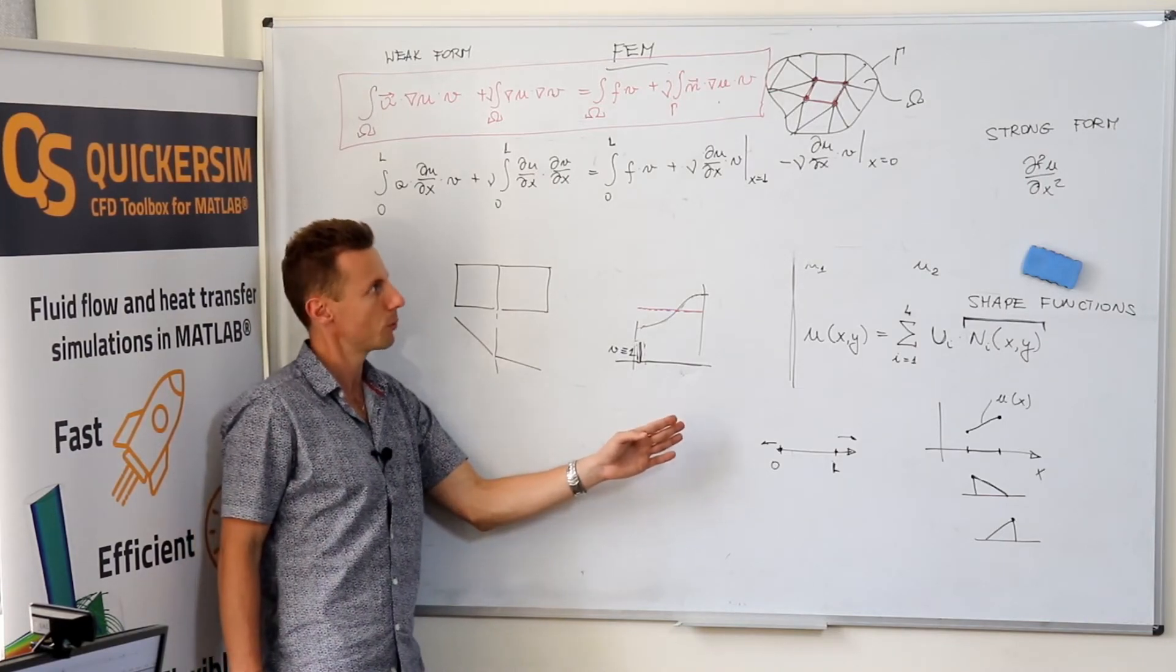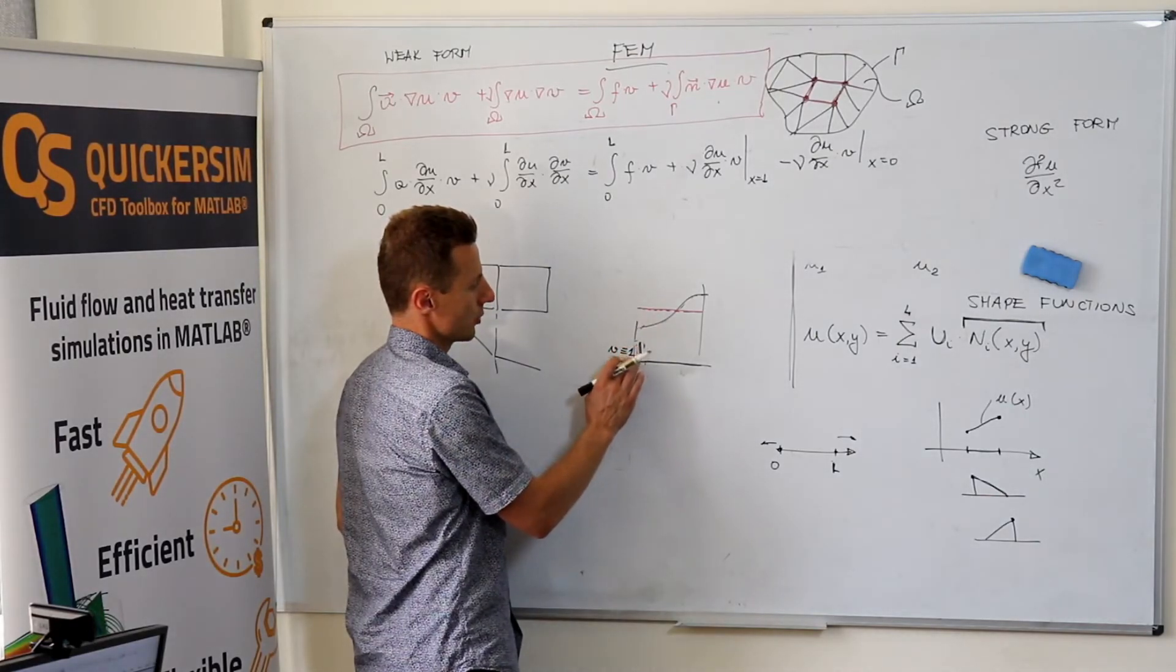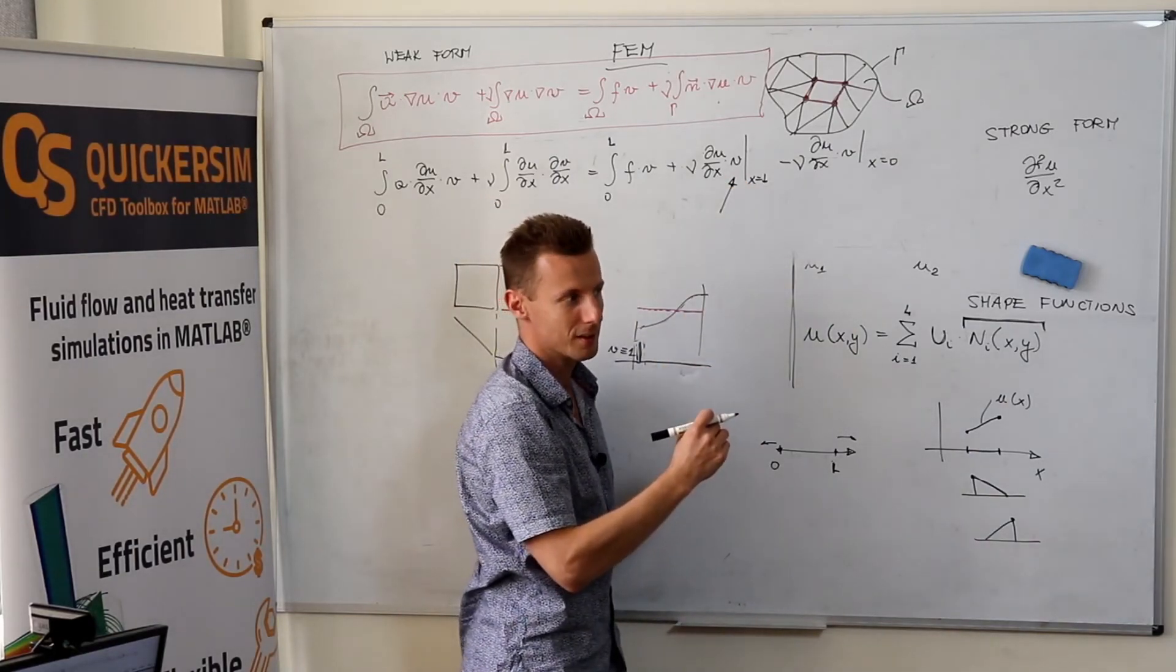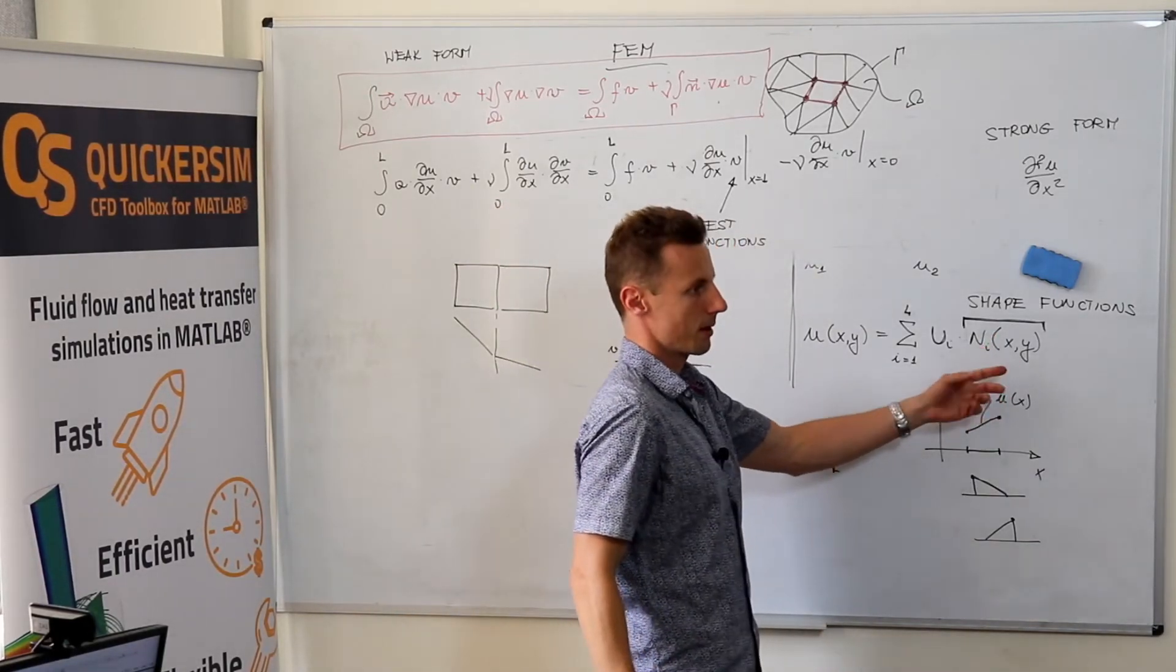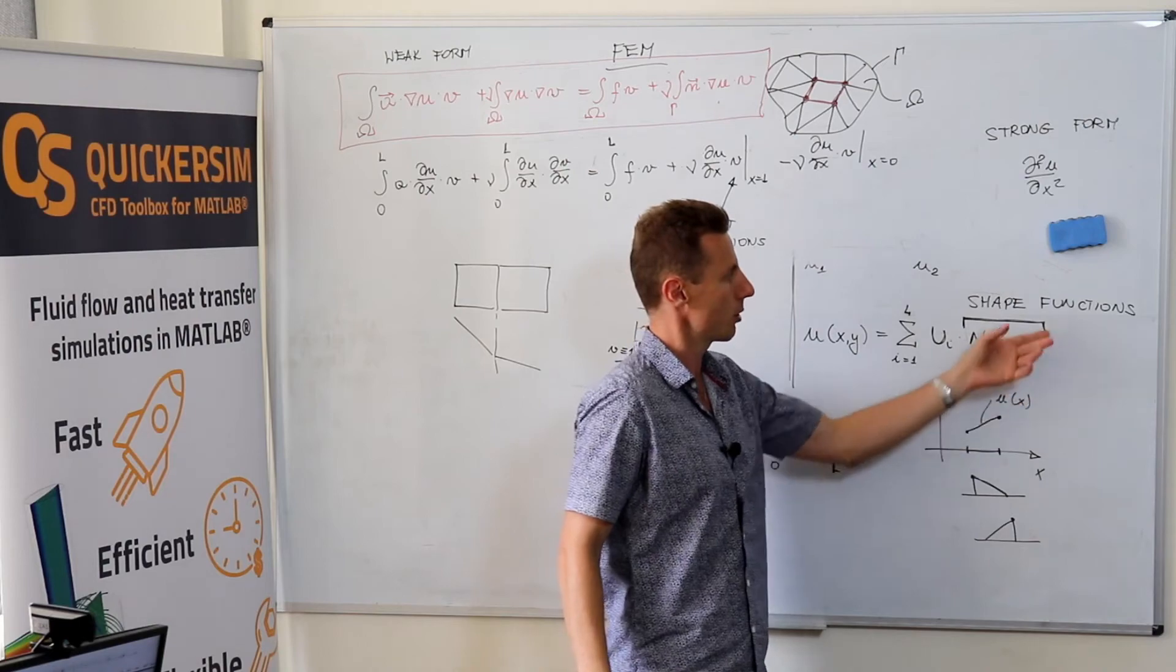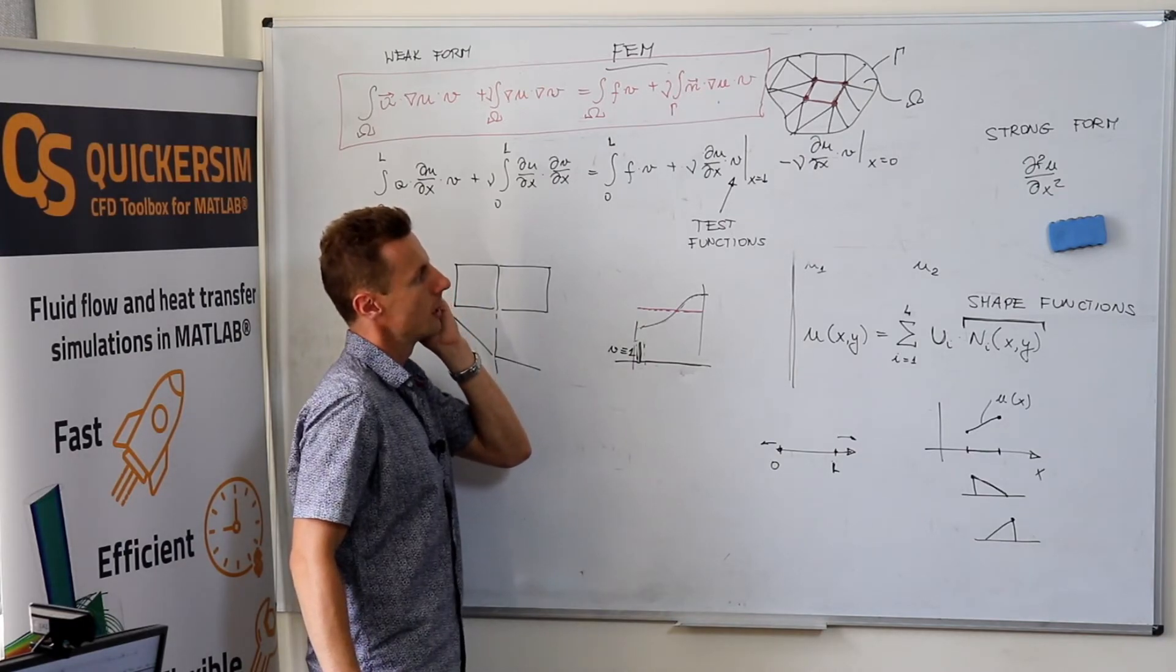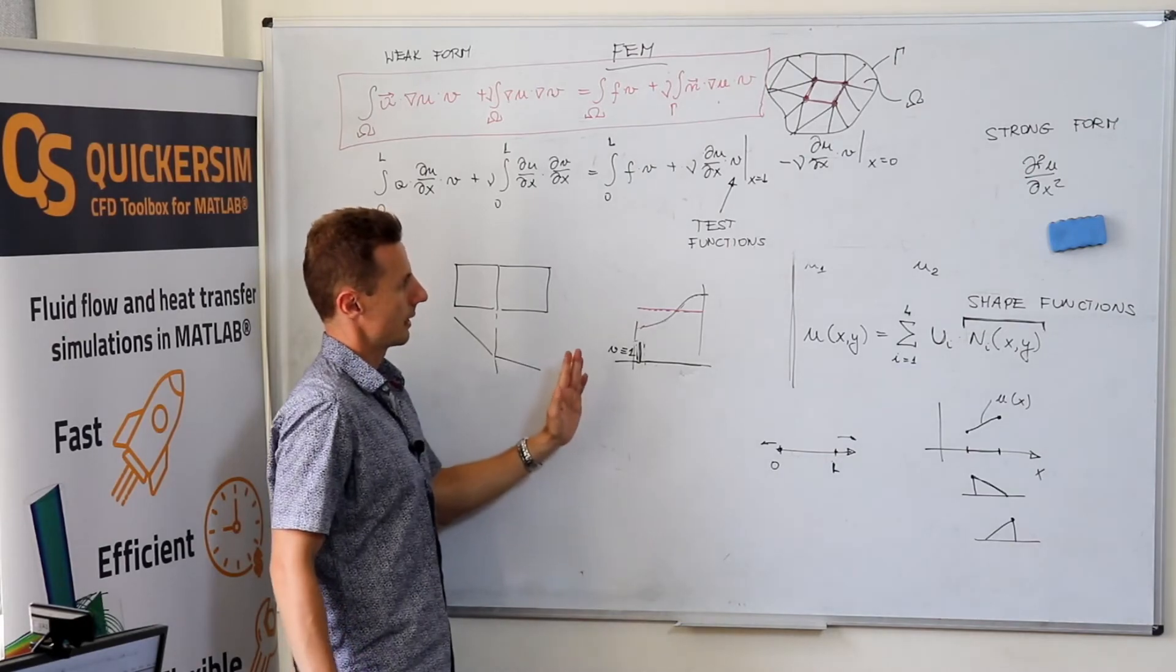Okay, now some remarks. I did my best to show you how you check using these v functions whether the equality holds also locally. And these functions are called test functions. These functions that are used to span the interpolation within the area of one element are called the shape functions. Shape functions are used to interpolate the field that you're trying to solve for. Test functions are used to test whether your solution holds locally and globally. That's it.